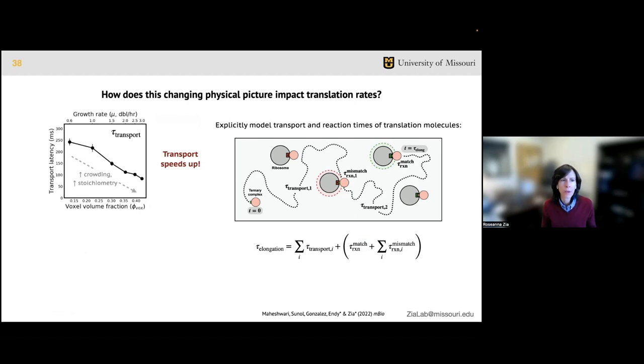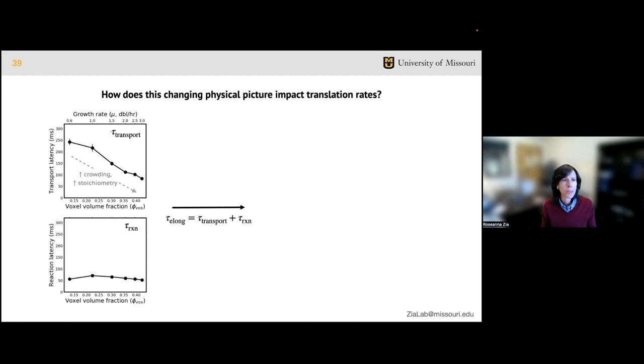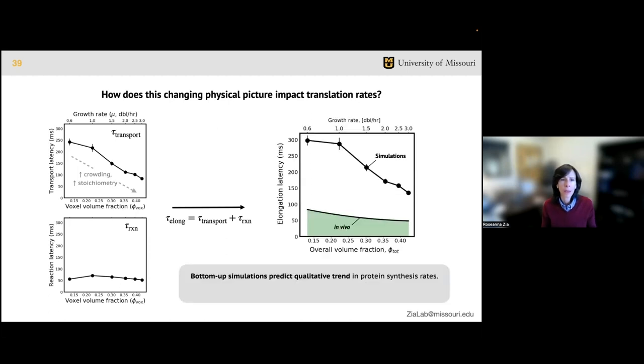We have chemistry and physics, and overall, making a longer story very short, these transport and reaction times all contribute to the overall translation time, which is what's measured in experiments. We found that the transport contribution indeed speeds up with growth rate, suggesting that improved stoichiometry wins over increased viscosity. The reaction time does not change significantly with growth rate and is up to five times faster than transport, meaning the physics are the rate-limiting process for translation elongation in E. coli. It's both an increase in proximity and change in stoichiometry and the relative abundance of translation molecules that causes this to happen.